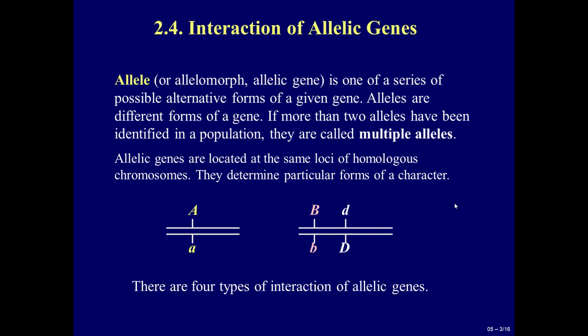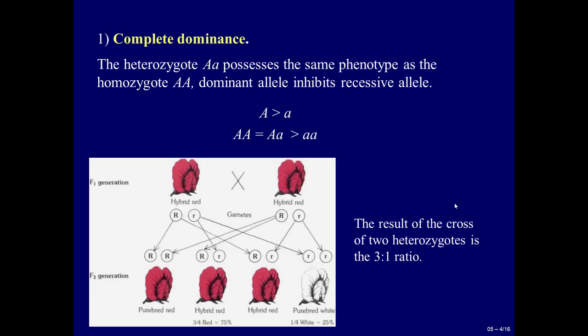There are four types of interaction of allelic genes. The first is complete dominance. The heterozygote (big A, small a) possesses the same phenotype as the homozygote (big A, big A). The dominant allele inhibits the recessive allele. Big A inhibits small a. The dominant homozygote has the same phenotype as the heterozygote, in contrast to the recessive homozygote. For example: red flower, red flower, and white flower. The result of the cross of two heterozygotes is the 3 to 1 ratio.